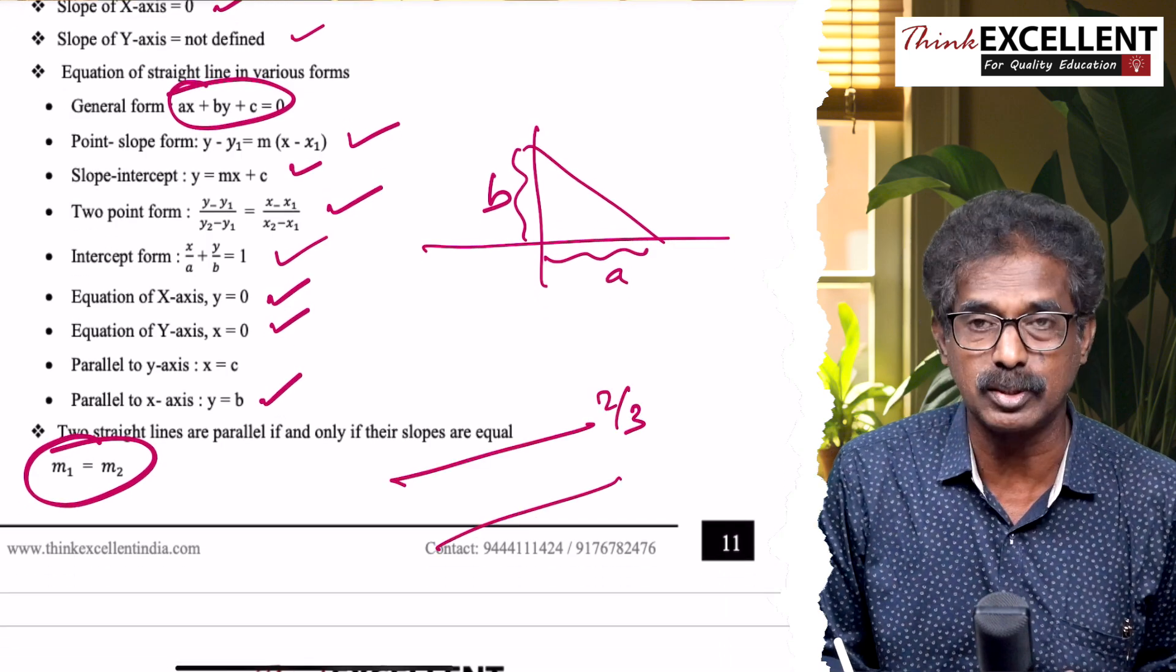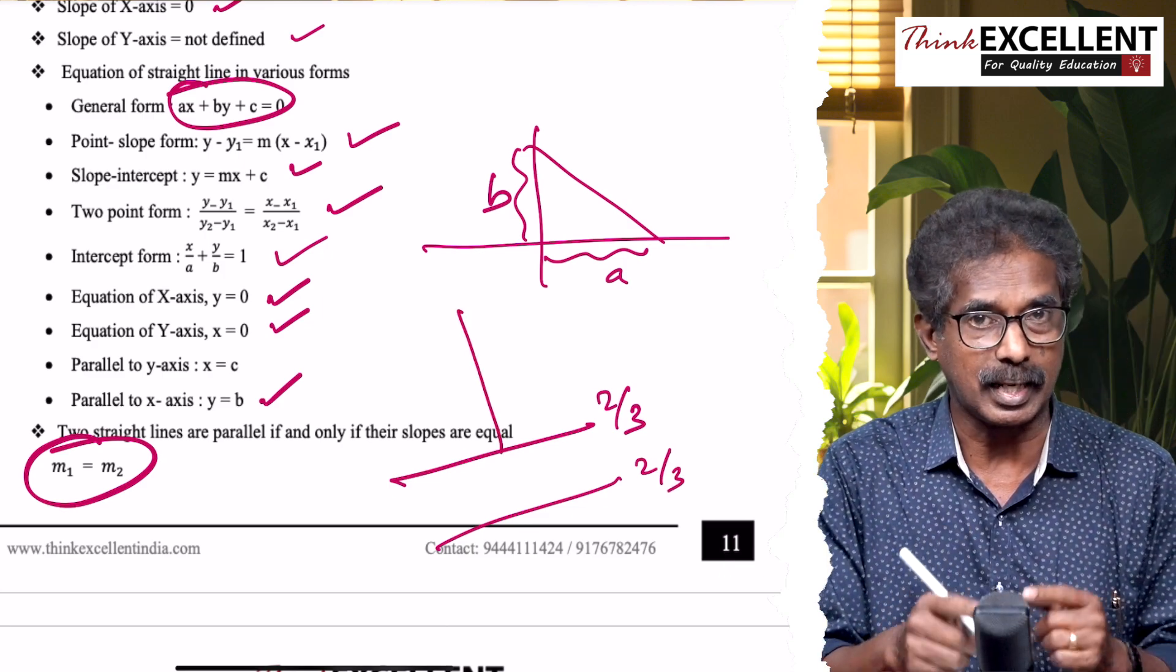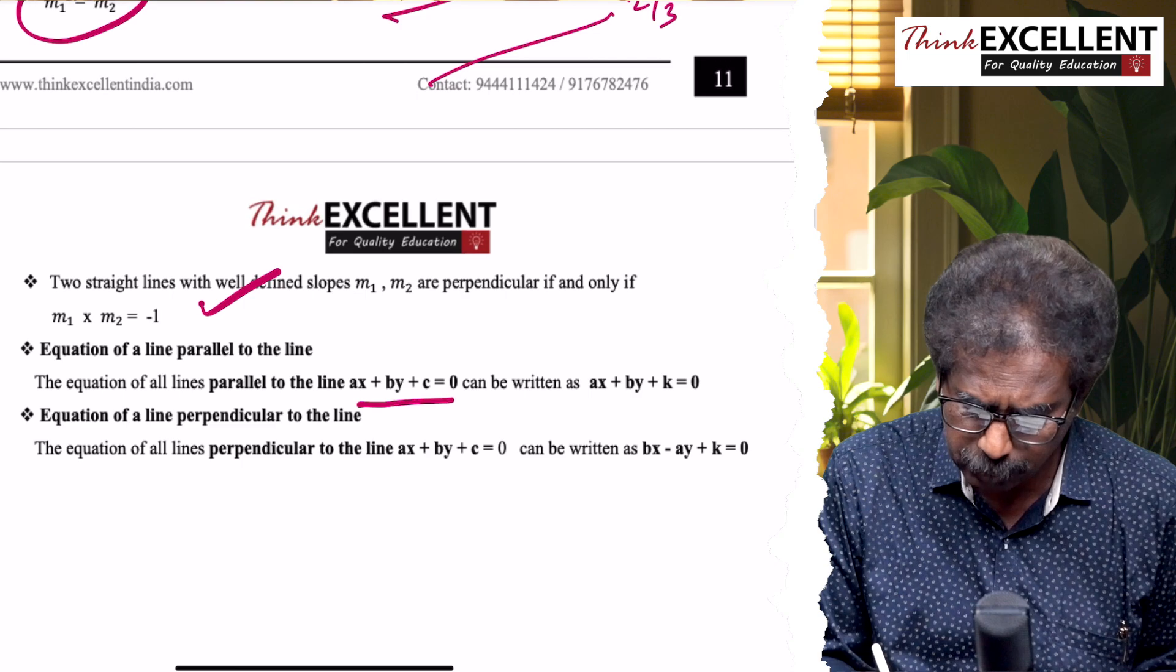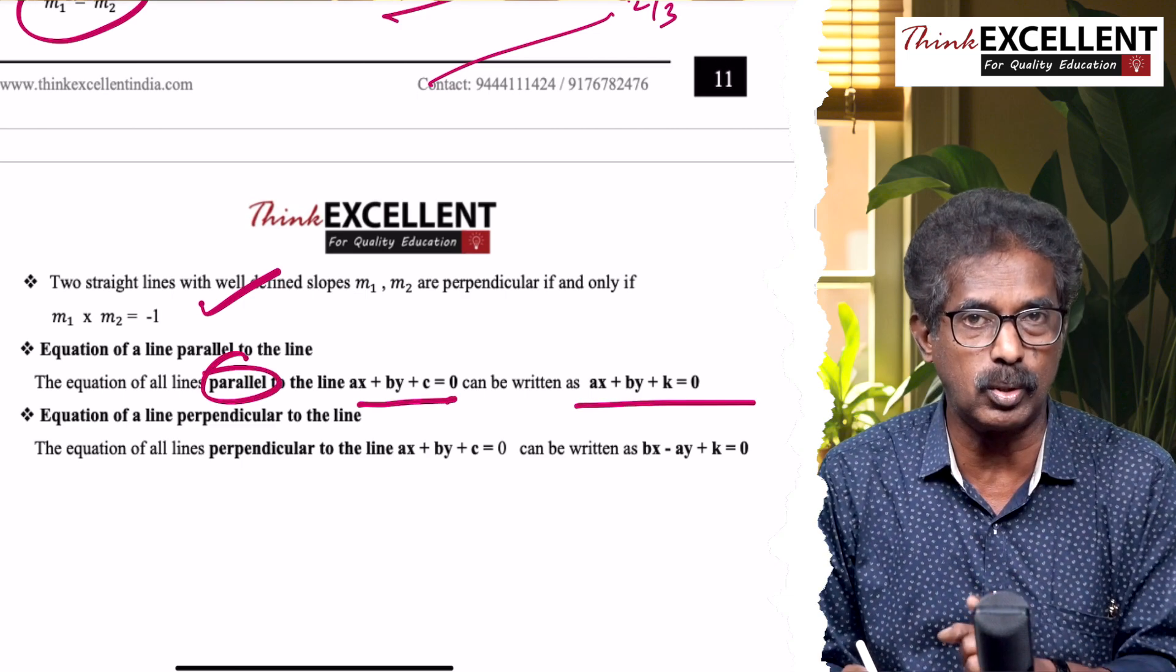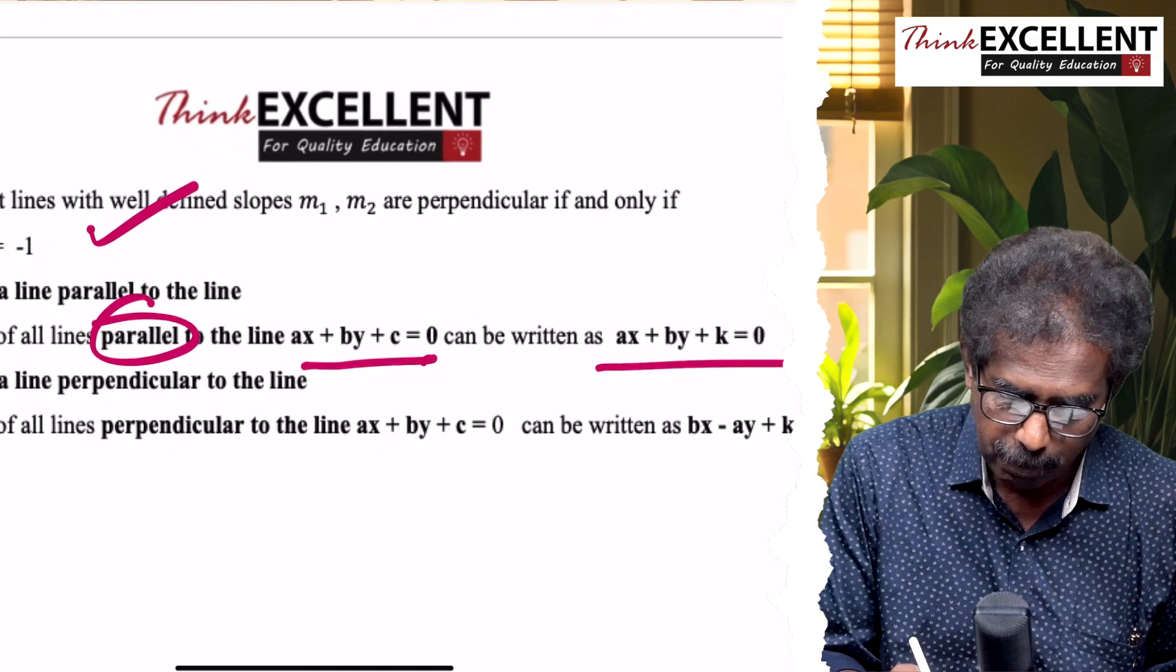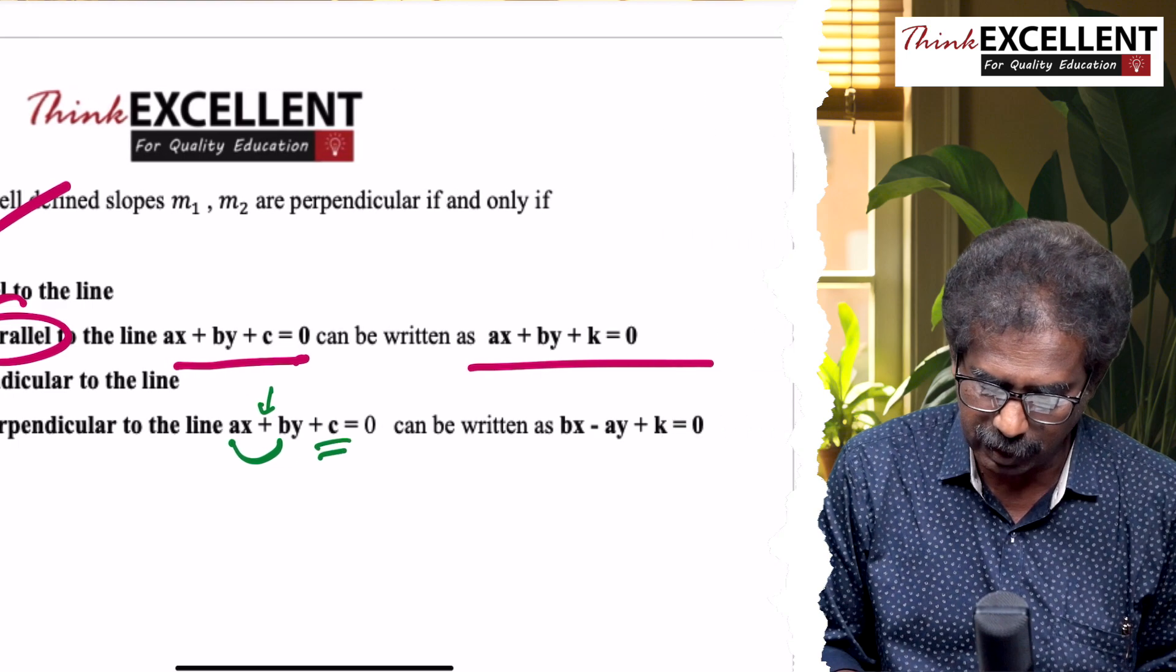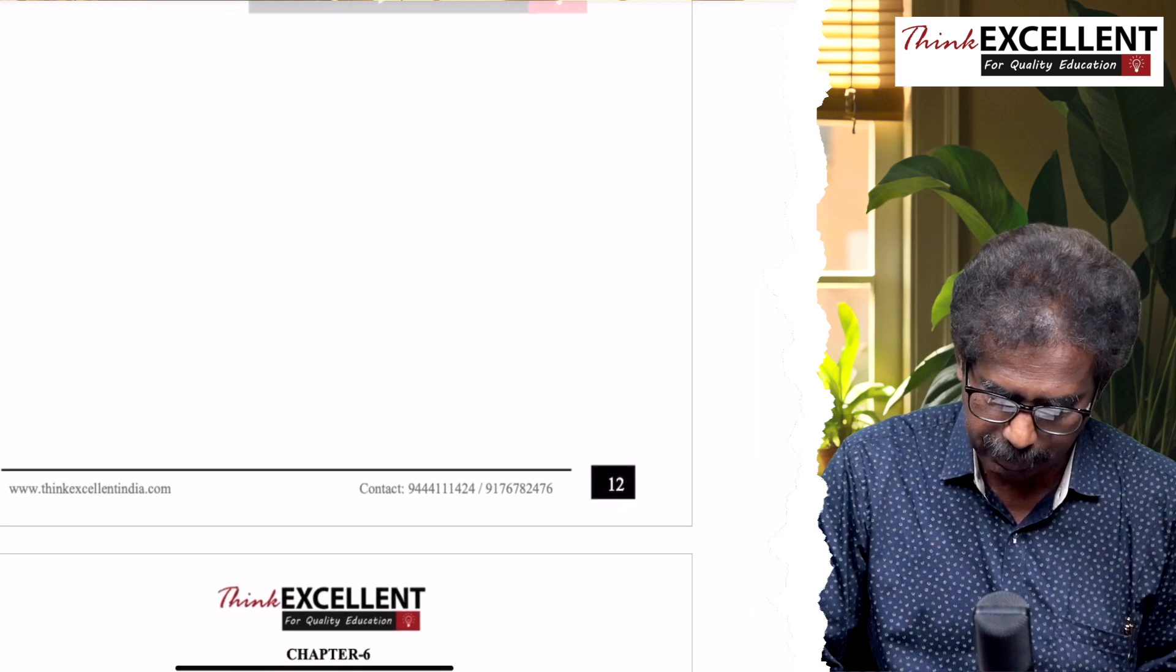Line slope 2/3, parallel line slope same, perpendicular change the sign and write the reciprocal: −3/2. One line equation, just make one change: change the constant alone. That perpendicular line is perpendicular to the equation - three changes you have to make: interchange the coefficients of x and y, change the sign in the middle, also change the constant. You will be getting equation of the perpendicular. That's all chapter number 5.